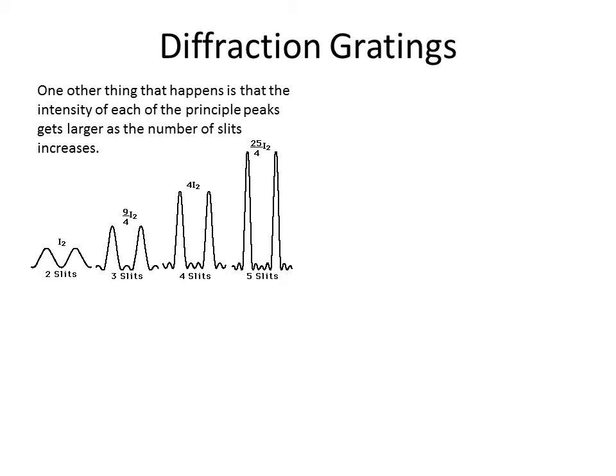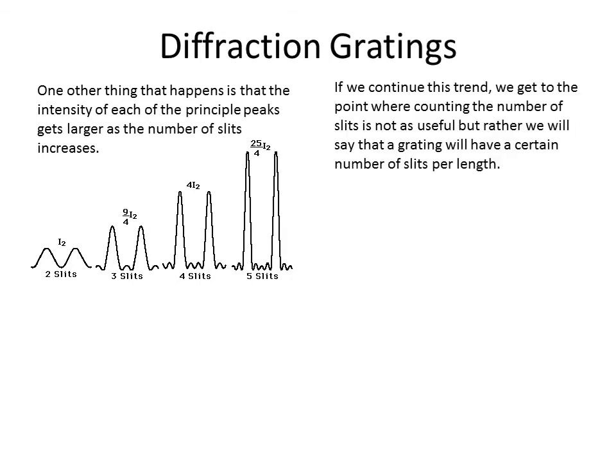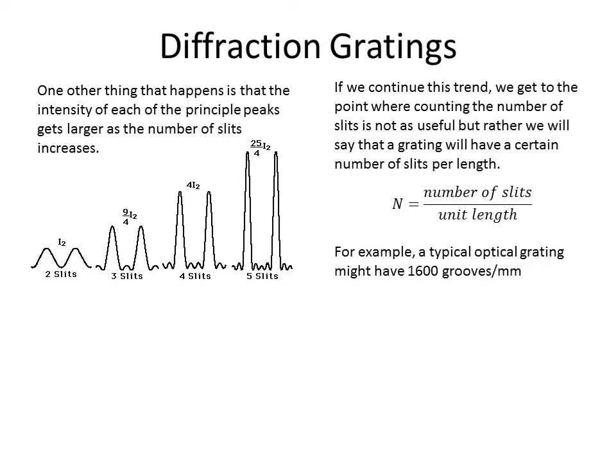As we look at more gratings with more and more lines, at some point we no longer see individual slits — we call them gratings. A grating is nothing more than a bunch of slits stacked next to each other, and we normally describe them in terms of the number of slits or grooves per unit length.